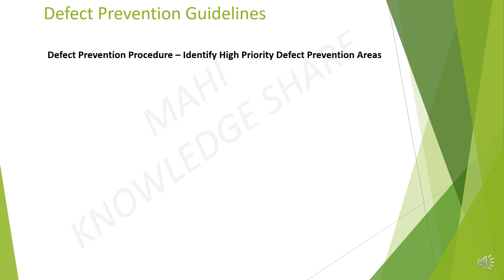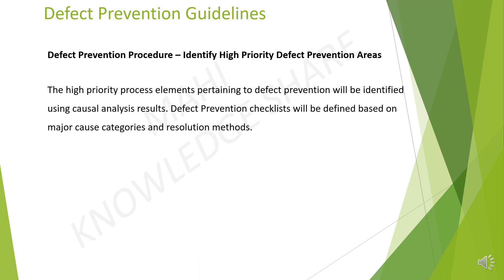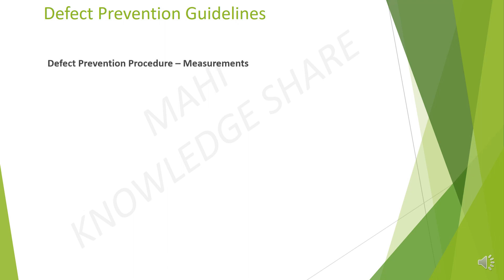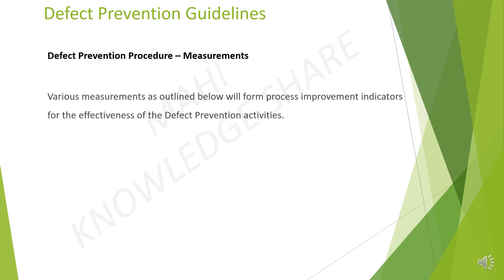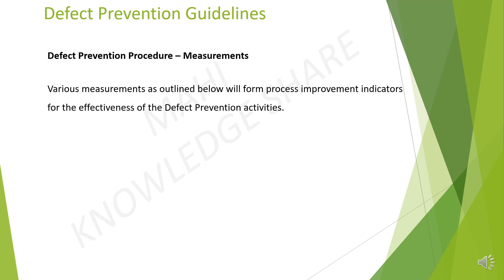Step 3: Identify high priority defect prevention areas. The high priority process elements pertaining to defect prevention will be identified using causal analysis results. The defect prevention checklist will be defined based on major cost categories and resolution methods. Step 4: Measurements. Various measurements, as outlined below, will form process improvement indicators for the effectiveness of defect prevention activities. Process and product metric trends.